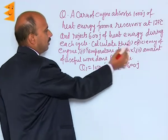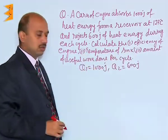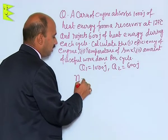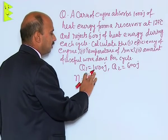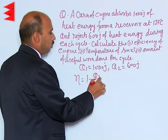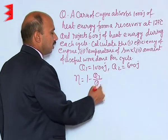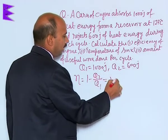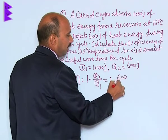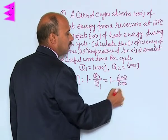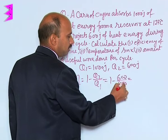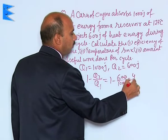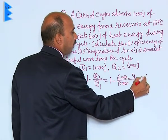Now calculate the efficiency of engine. We know efficiency eta is equal to 1 minus Q2 upon Q1. That is 1 minus 600 divided by 1000, which is 4 by 10, equal to 0.4.